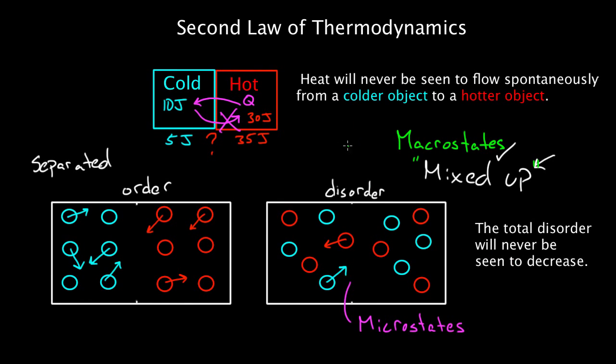So to help us keep these ideas straight, we need some different terms. Physicists came up with a couple terms. One is a macro state, and a macro state is basically saying, okay, the particles are mixed up. That's one possible macro state, and we can be more precise. We can say the reds and the blues can be anywhere within the box.